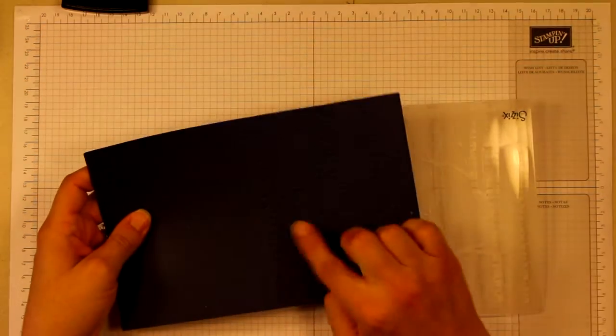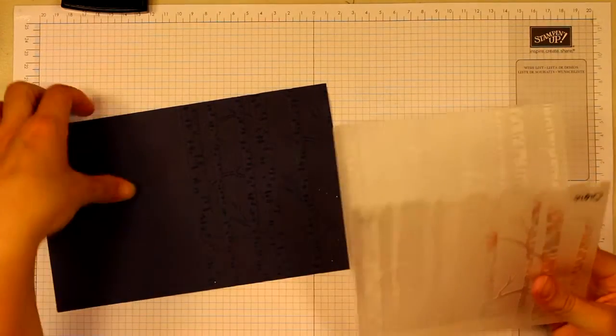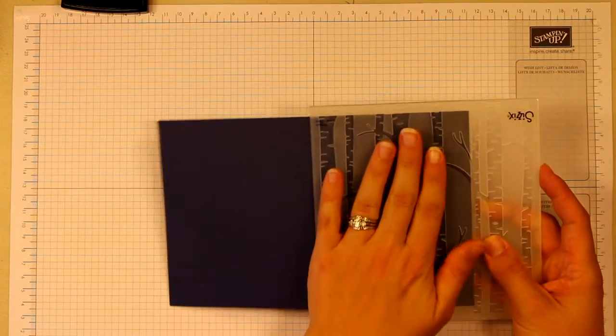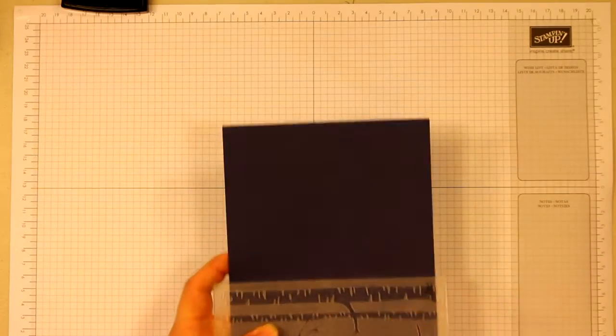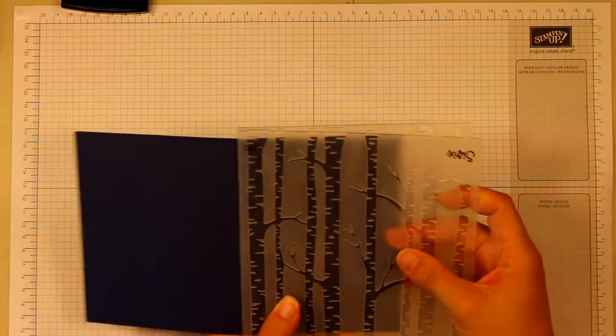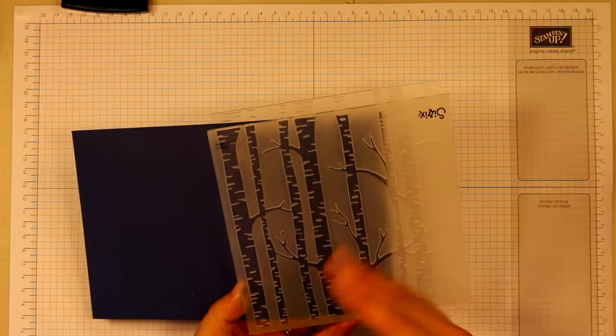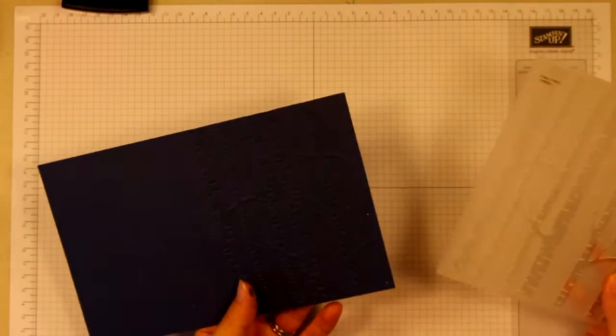Here is how to get started. I already embossed the Night of Navy background using the trees, and you'll want to make sure when you do this I just inserted the area that's going to be the front of the card in here halfway and then ran it through the Big Shot this direction. You want to make sure that the correct direction is up on this since the branches, you don't want the branches to be pointing down.